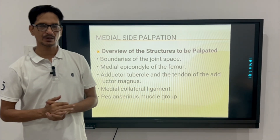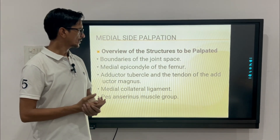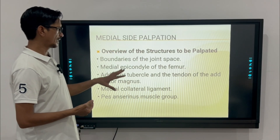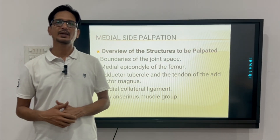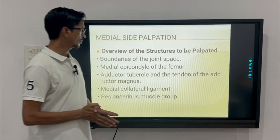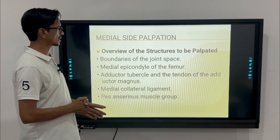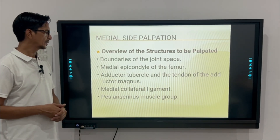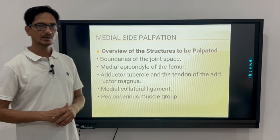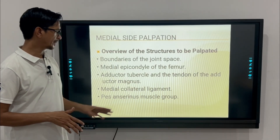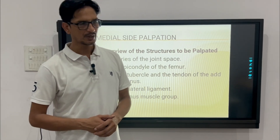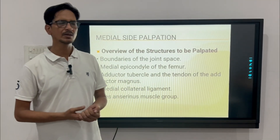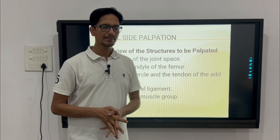Next is medial palpation of the knee joint. Some of the structures we can palpate over the medial aspect of the knee are: first, the boundary of the joint space; second, the medial epicondyle of the femur; third, the adductor tubercle and tendon of adductor magnus; and fourth, the medial collateral ligament and the pes anserinus muscle group. Apart from these, there are several more structures we can palpate over the medial side.